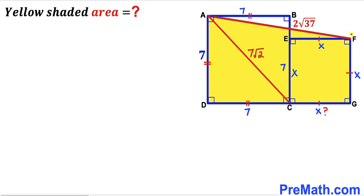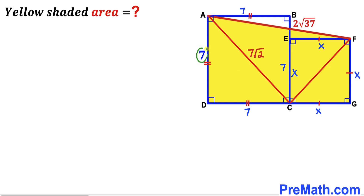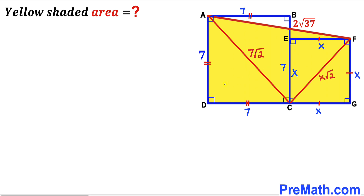In the next step, we connect vertices C and F. We observe that CF is the diagonal of the smaller square. By the same analogy: the larger square has side 7 and diagonal 7√2, so the smaller square with side X has diagonal X times square root of 2 units.